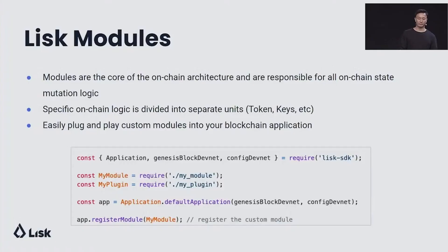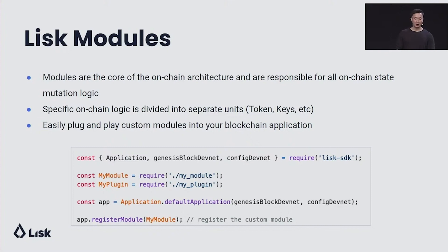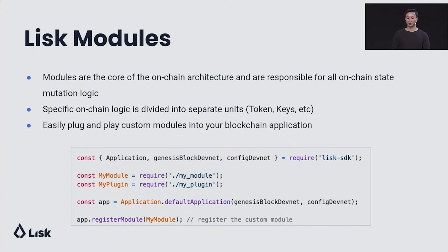Now I'll talk a little bit more about on-chain architecture. Modules are the core of on-chain architecture, and they're responsible for all the on-chain state mutation logic. Any specific on-chain logic is divided into separate units — for example, any token transfer logic is in the token module. Modules are easily plug-and-play and can be plugged into your blockchain application. Looking at the code example below, it's very simple: first, you require your application genesis block and configuration from the Lisk SDK; then you can require your own custom module called MyModule; then you simply initialize your application and finally register your module.